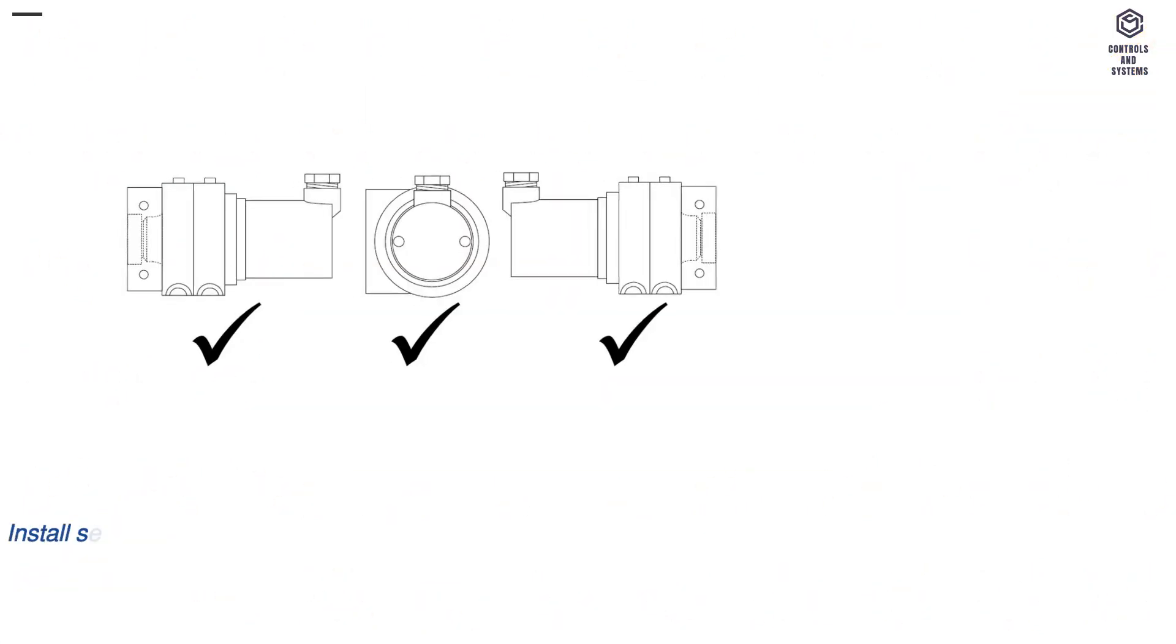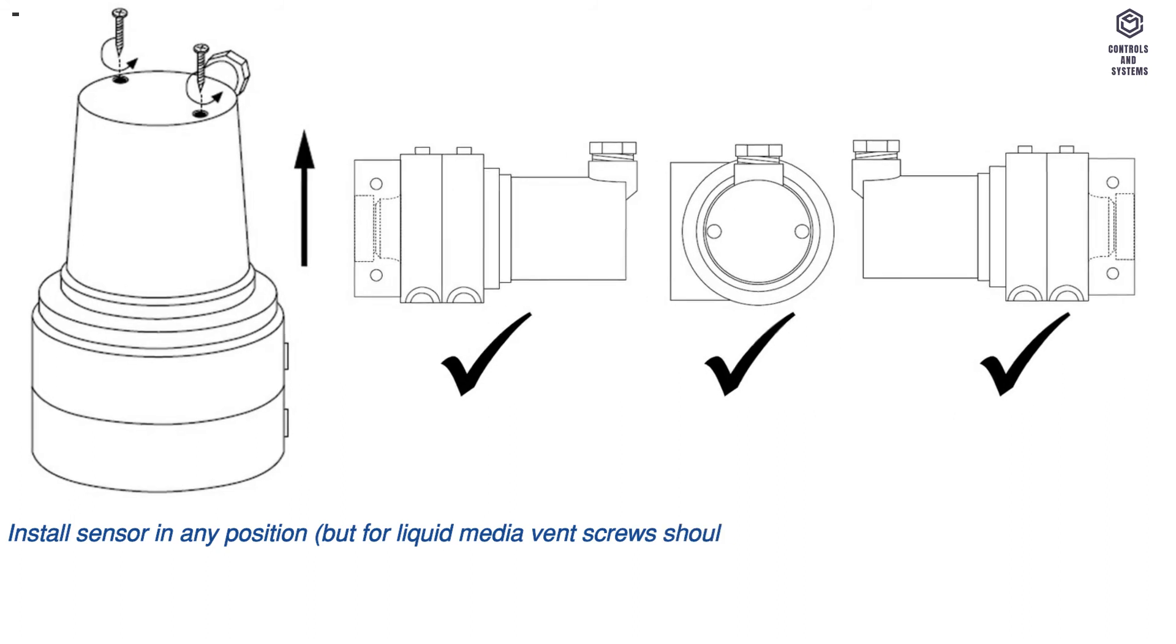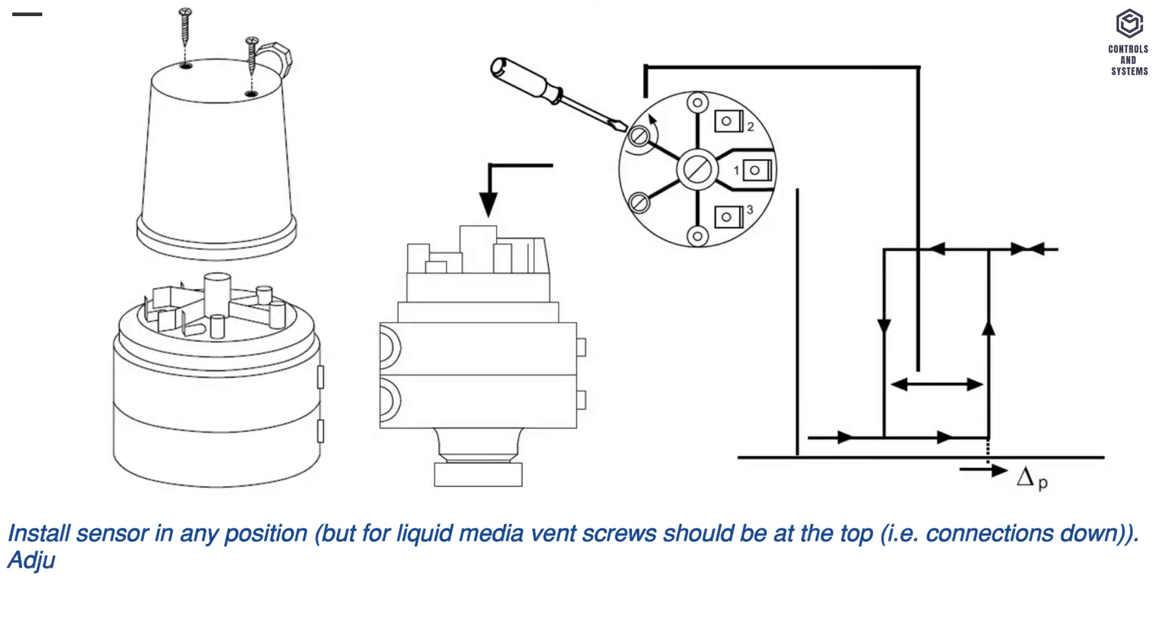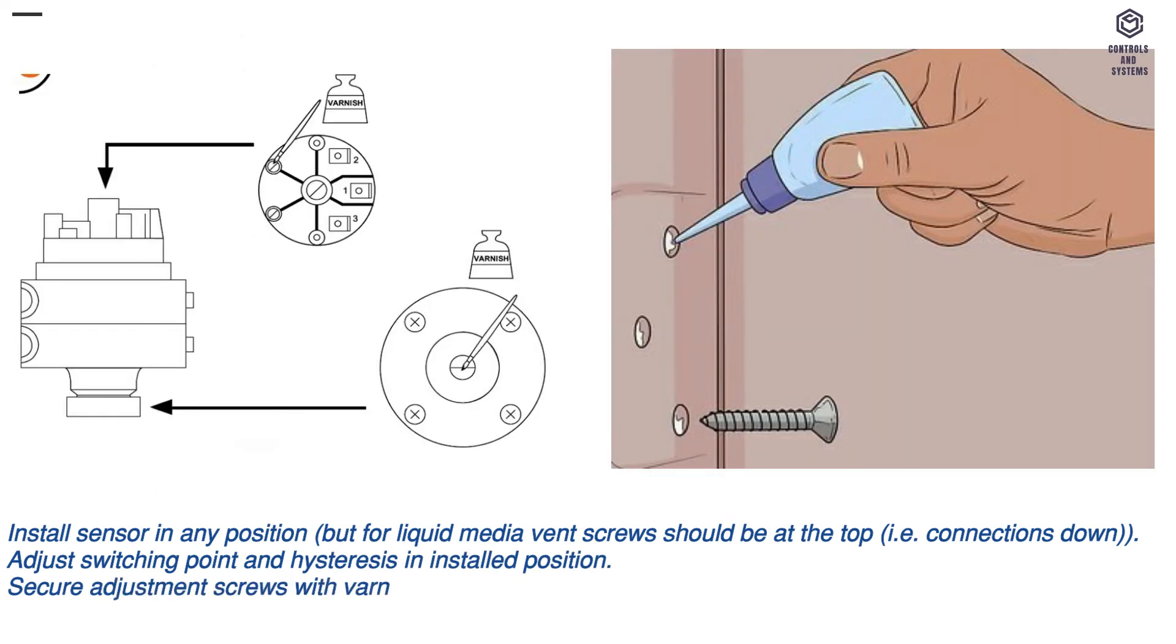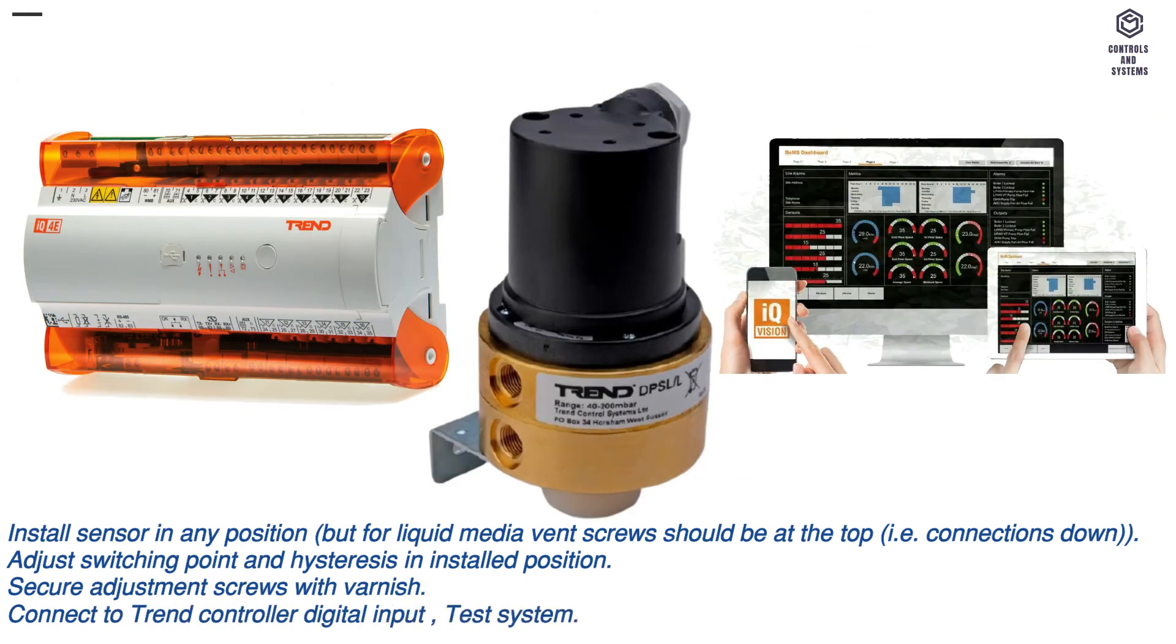Installation: install sensor in any position, but for liquid media vent screws should be at the top, that is connections down. Adjust switching point and hysteresis in installed position. Secure adjustment screws with varnish. Connect to trend control or digital input. Test system.